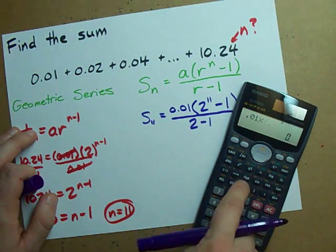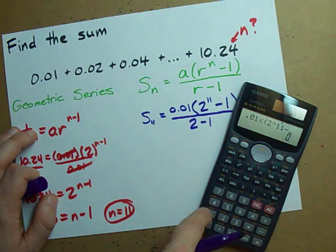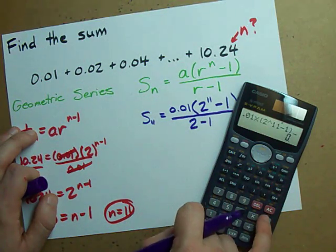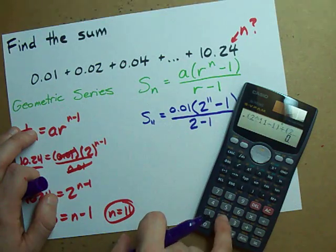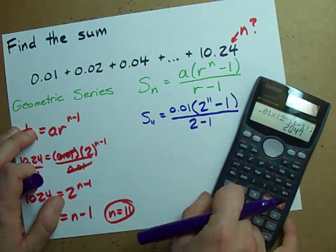.01 times in brackets 2 to the power of 11 minus 1 divided by and then my denominator in brackets 2 minus 1. I get 20.47.